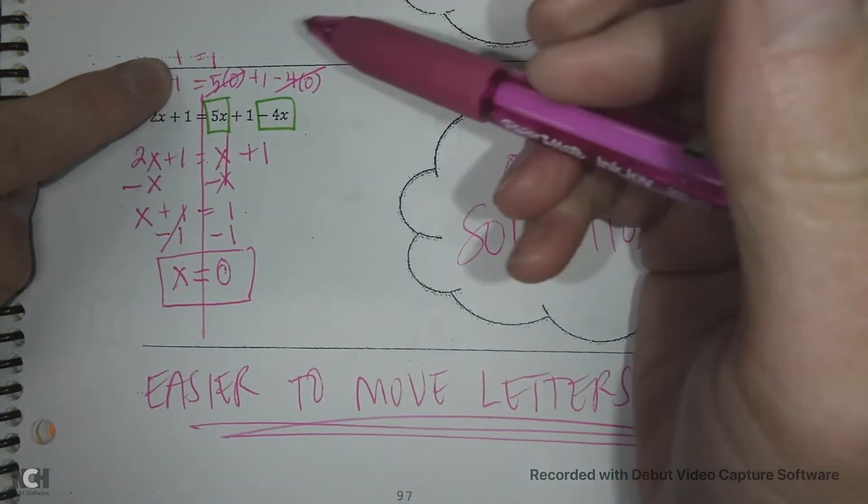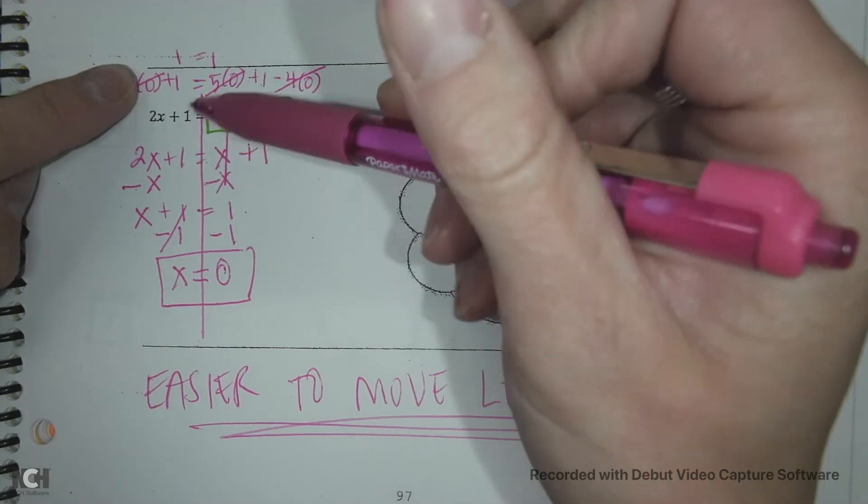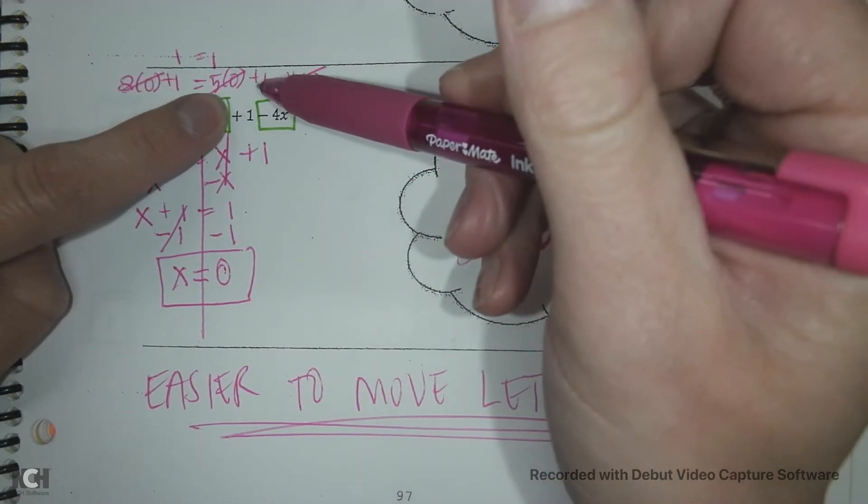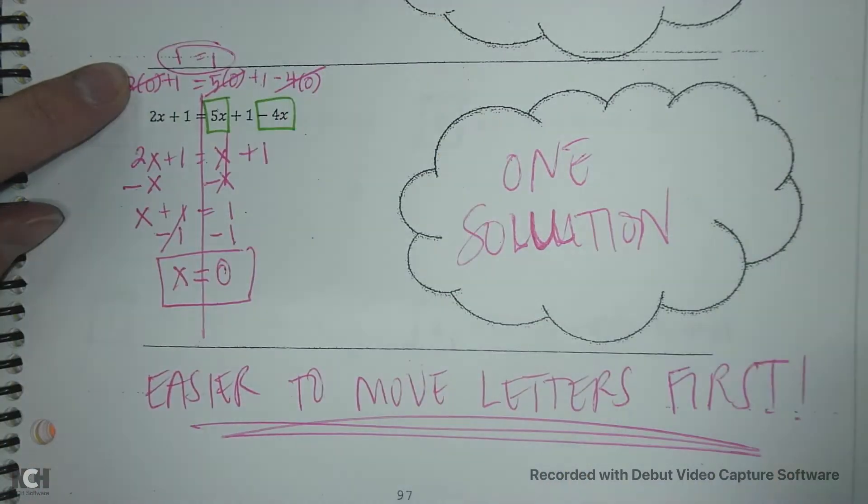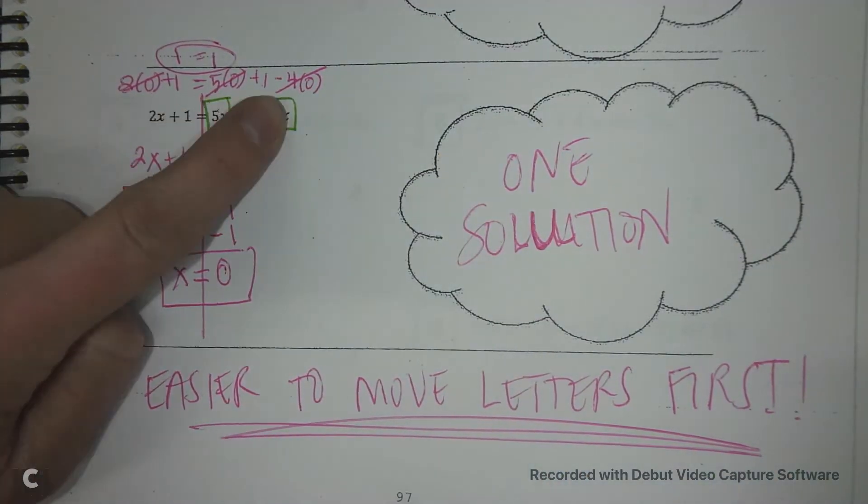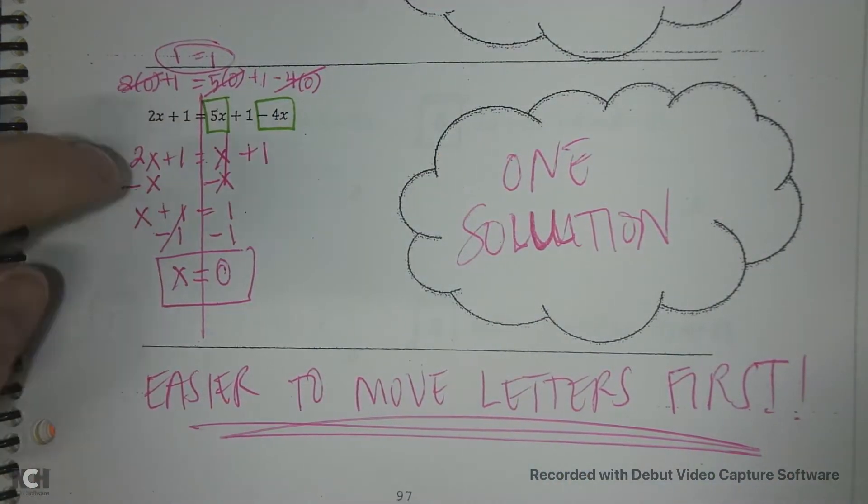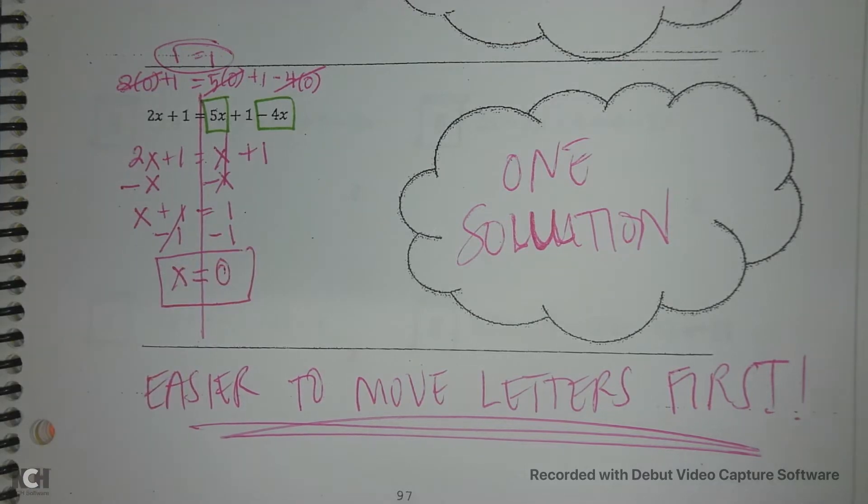So my left hand side equals 1 when my x is 0 and my right hand side equals 1 when my x is 0. 1 equals 1. So it is the solution to this equation. It makes the left side equal to the right side. So that is a one solution and again something we're familiar with.